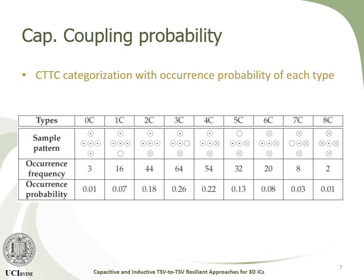The capacitive coupling is categorized into 9 different cases from 0C to 8C, and the occurrence frequency and occurrence probability of each pattern is calculated, as shown in this table.